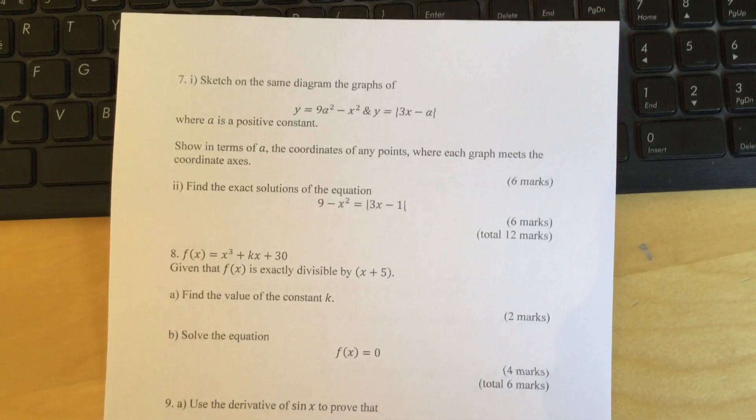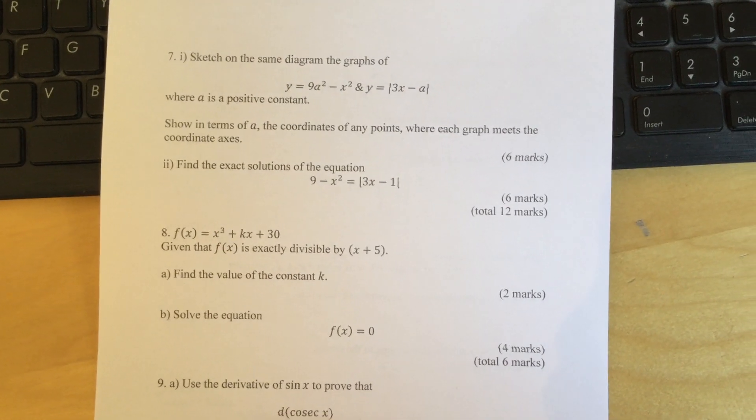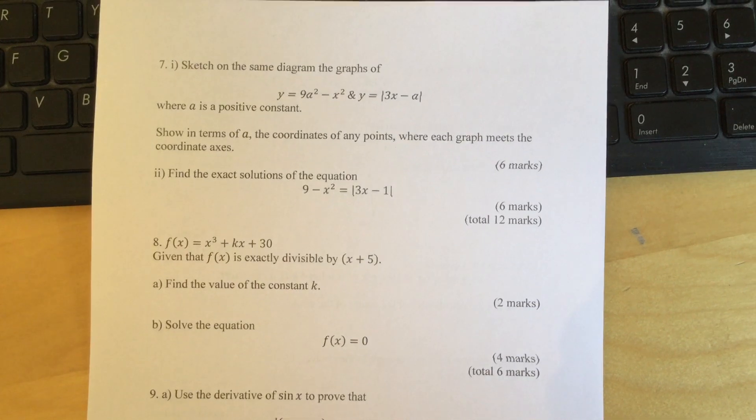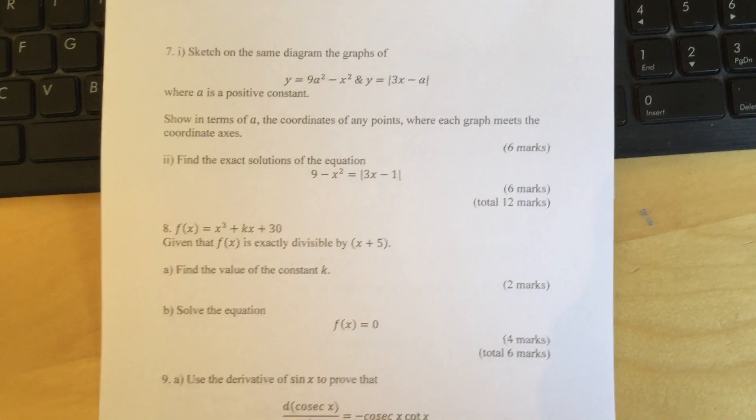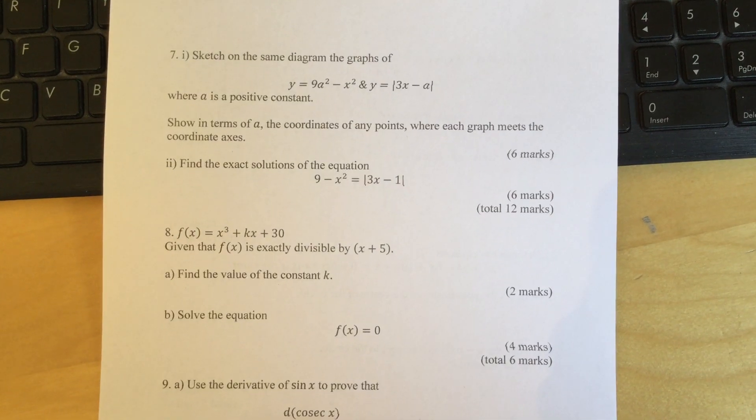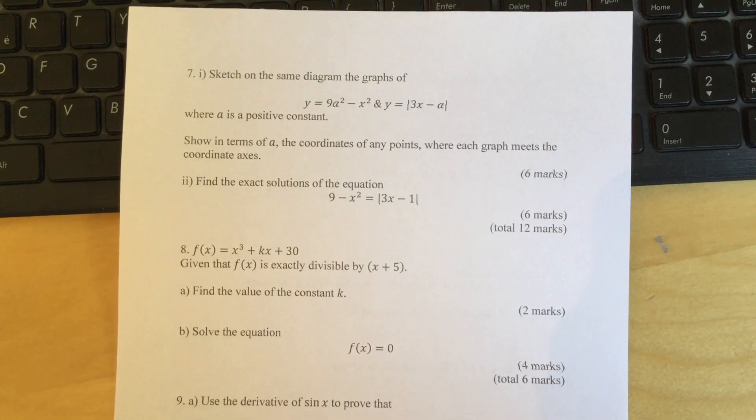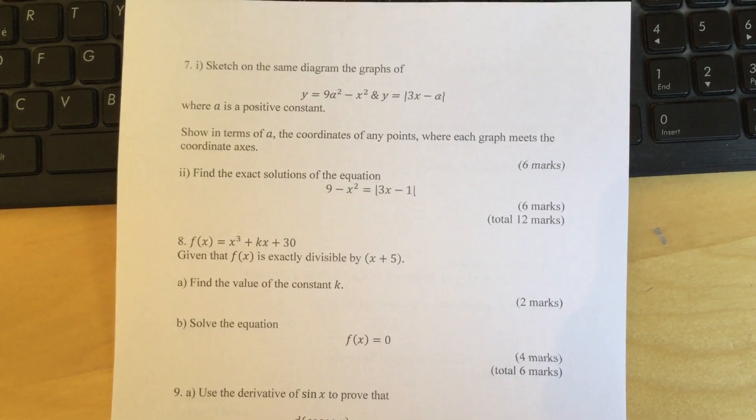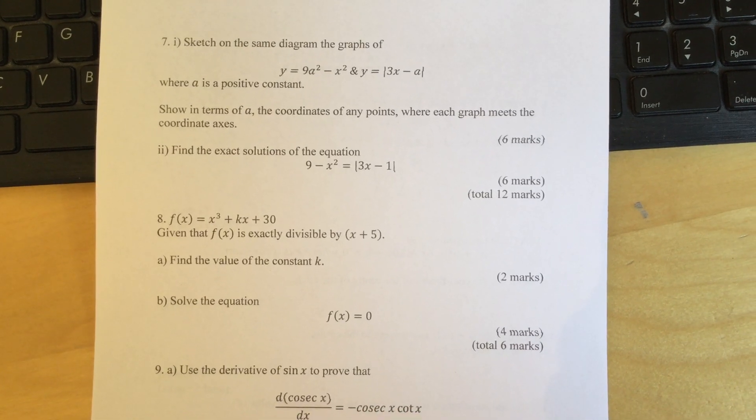Question 7: Sketch on the same diagram the graphs of y = 9a² - x² and y = |3x - a|, where a is a positive constant. Show in terms of a the coordinates of any points where each graph meets the coordinate axes. Part 2: Find the exact solutions of the equation 9 - x² = 2|3x - 1|.